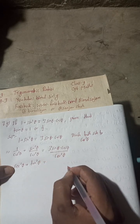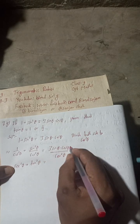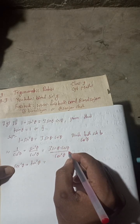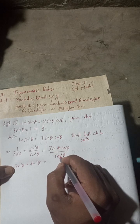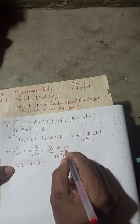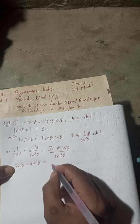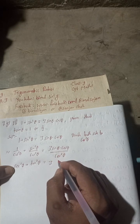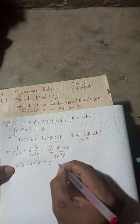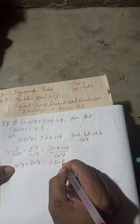One by cos²θ is sec²θ, and sin²θ by cos²θ is tan²θ. On the right side, one cos cancels, so three sinθ by cosθ becomes three tanθ. So we have: sec²θ + tan²θ = 3tanθ.